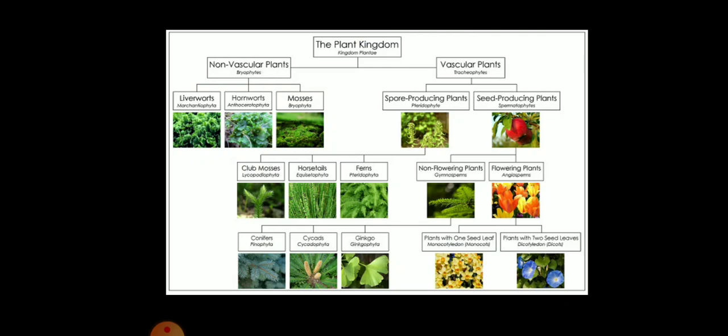The plant kingdom system in a more advanced manner recognizes non-vascular plants and vascular plants, depending upon the tissues they contain. Non-vascular plants, the bryophytes, are again divided into liverworts, hornworts, and mosses. In case of vascular plants, these are categorized as spore-producing plants — that is, the pteridophytes — and seed-producing plants, that is, the spermatophytes.